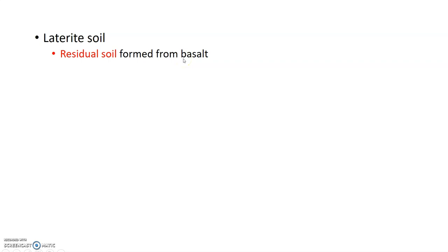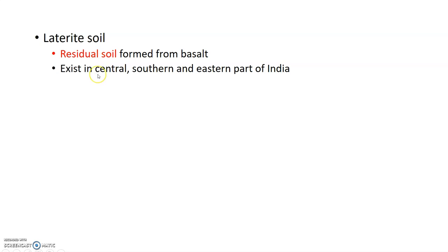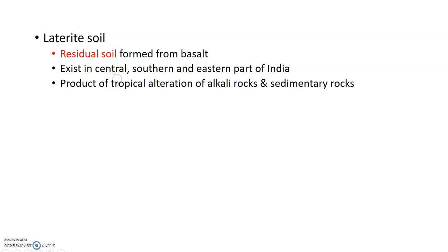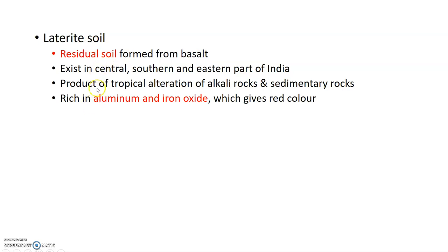Laterite soil is rich in aluminum and iron oxide. The iron oxide gives it a red color. In wet conditions it can be easily cut.